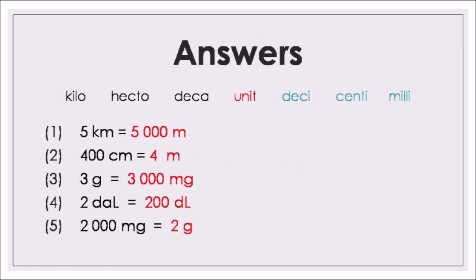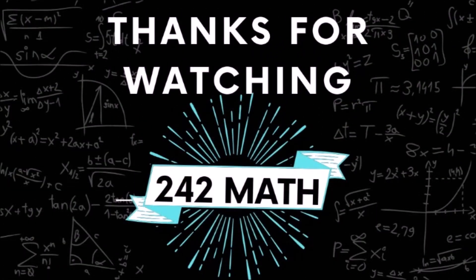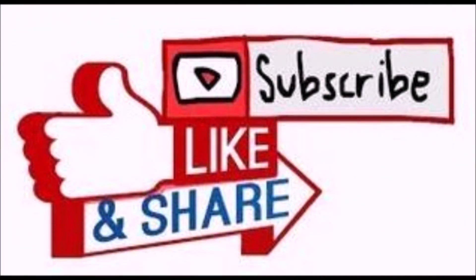Here are the answers. Number 1: five kilometres is 5,000 metres. Number 2: four hundred centimetres is 4 metres. Number 3: three grams is 3,000 milligrams. Number 4: two decaliters is 200 deciliters. Number 5: two thousand milligrams is 2 grams. Hope you got five out of five. If not, go back over and make sure you understand the metric system. Thank you all for watching — this is an introduction to the metric system.